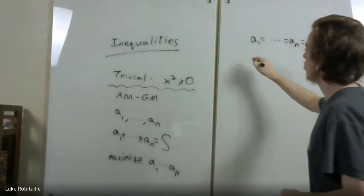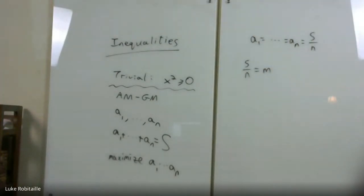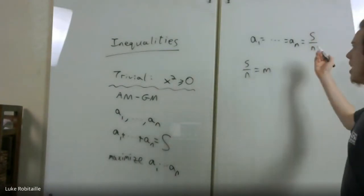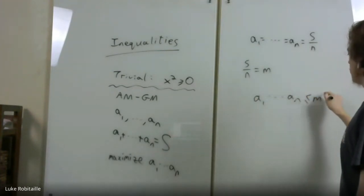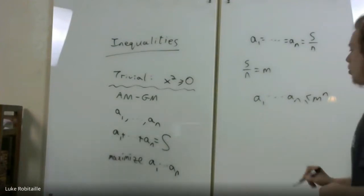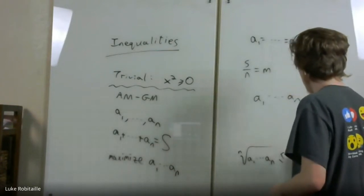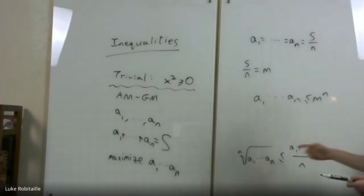So you might conjecture that the maximum is achieved when all the numbers are equal. Let S over N equal M — the arithmetic mean of the numbers. We want to prove that the maximum is M to the N, achieved when they're all equal, so their product is at most M to the N. This is basically the AM-GM inequality — normally written with Nth roots, but this is what's going on. And it's useful in all sorts of inequality problems.